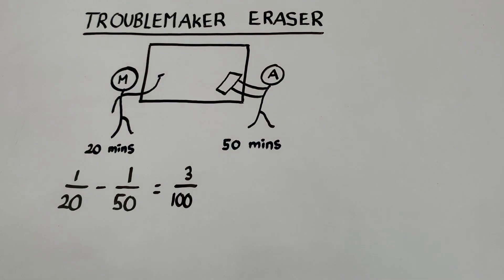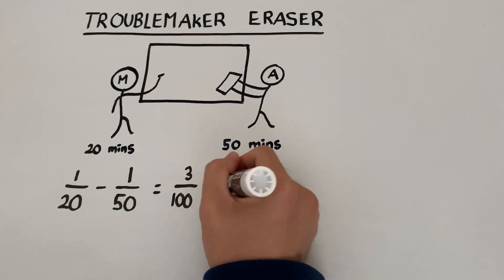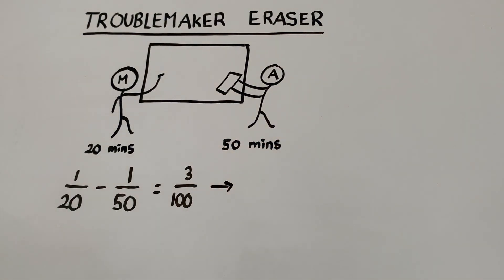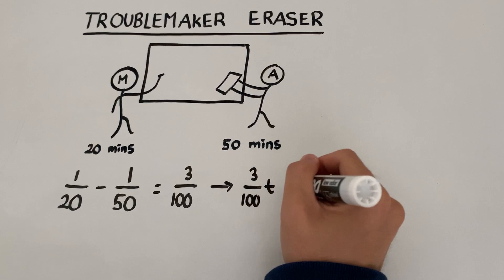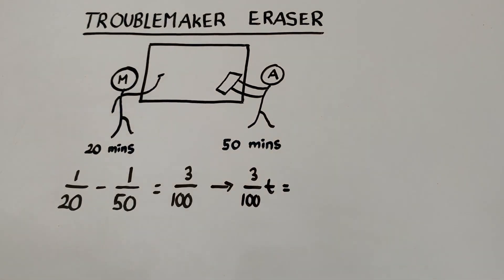So, if we now let T be the total amount of time that it takes for the entire board to be covered, we can set up an equation. So, we would have 3/100 times T equals 1.